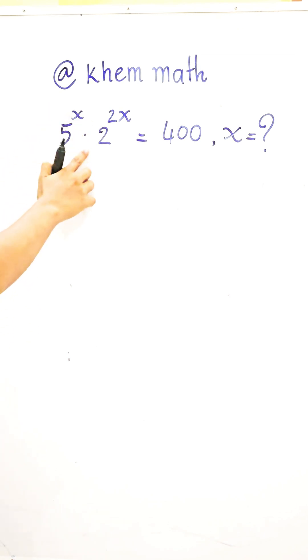5 power x times 2 power 2x is equal to 400 and find the value of x. Okay, look, here is the exponential equation and it's half this frame basic. It is 5 and it is 2 and also it's different in exponents.